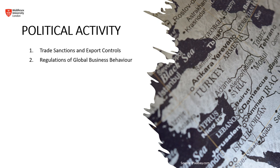For example, a country might impose sanctions on another to deter human rights abuses or aggression against another country. Export controls are government-imposed restrictions on the export of certain goods, technologies, and data for reasons including national security, foreign policy, or economic protection. Export controls can prevent the dissemination of sensitive technologies that could be used in weapons development, cyber espionage, or other activities that might compromise a nation's security. They require companies to obtain licenses for certain exports and comply with a list of regulations and procedures.